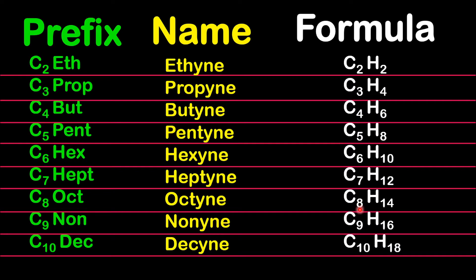For octyne, it's eight times two, which is sixteen, minus two gives fourteen hydrogen — C8H14. For nonyne, nine times two is eighteen, minus two gives sixteen hydrogen — C9H16. You can always practice the ones skipped to check your understanding.